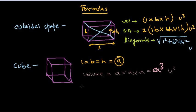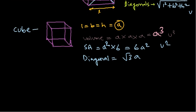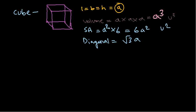For the surface area of a cube, there are six surfaces and each surface has area a², so surface area = 6a², in square units. The diagonal of a cube is √3 × a. These are the formulas for a cube.